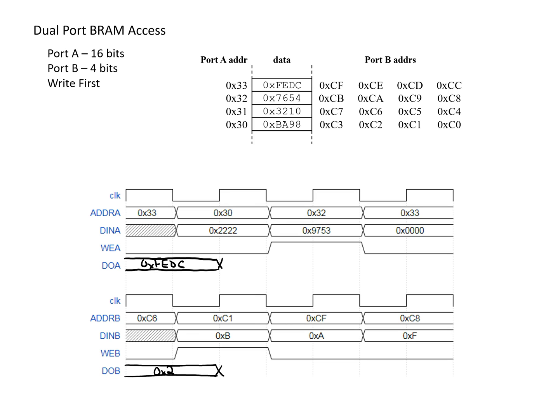Now we're going to look at the next clock cycle. Since this is set up in write-first mode, we look to see if any writes are happening. Looking at port B, we see on the rising edge of the clock the write enable bit is set. The address is C1, which currently holds a 9, but we're writing a value of B to it. So this 9 takes on the value of B, and since we're also reading from this address and we're in write-first mode, we read out a B.